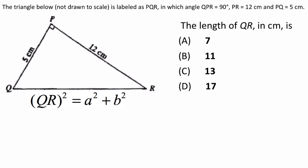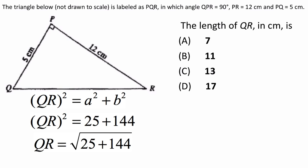So let us begin. QR squared is going to be equal to 5 squared plus 12 squared. 5 squared is 25, and 12 squared is 144. Therefore, QR itself will be equal to the square root of 25 plus 144, which is 169. The square root of 169 is 13. Therefore, the length of QR in centimetres is going to be 13, and the answer for this multiple choice question will be C.